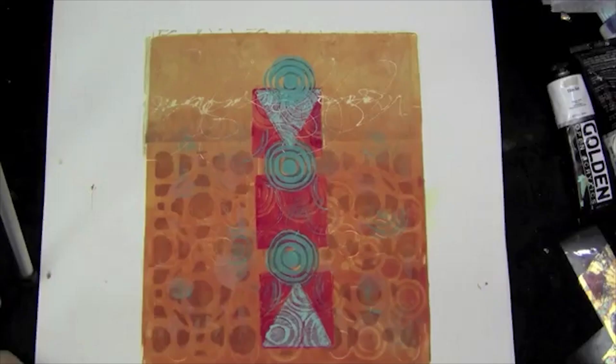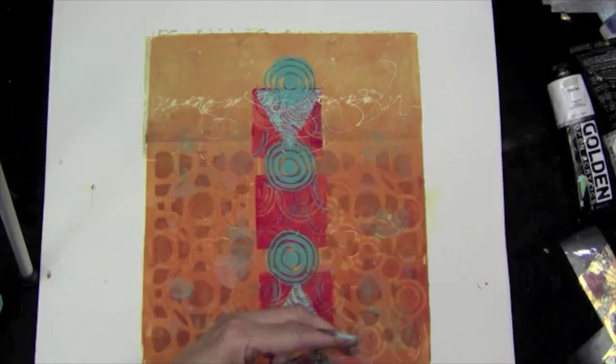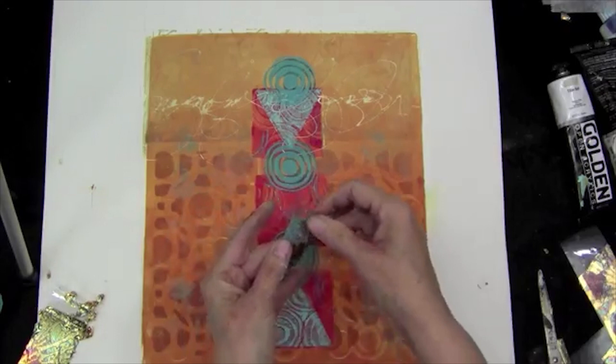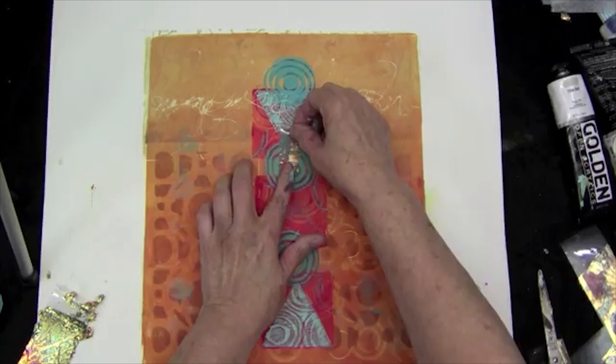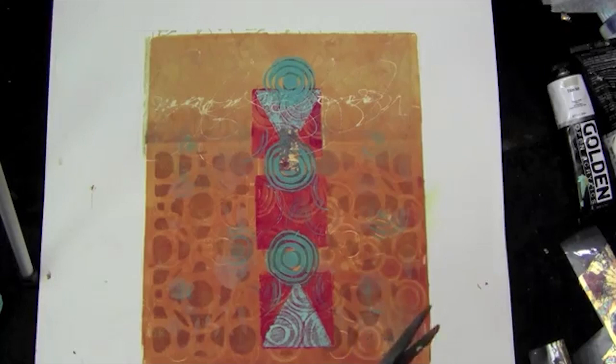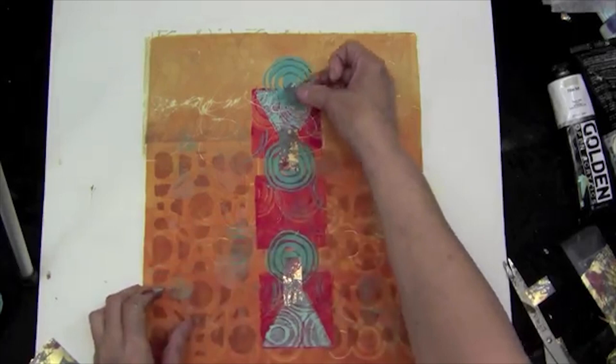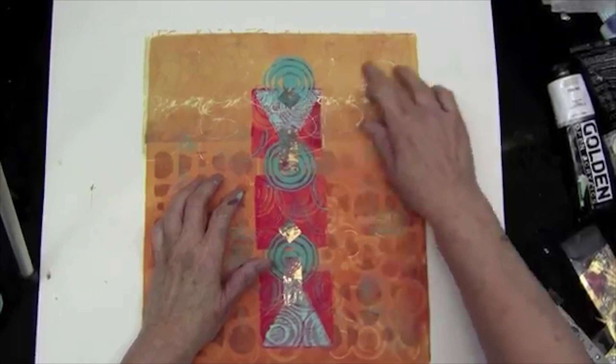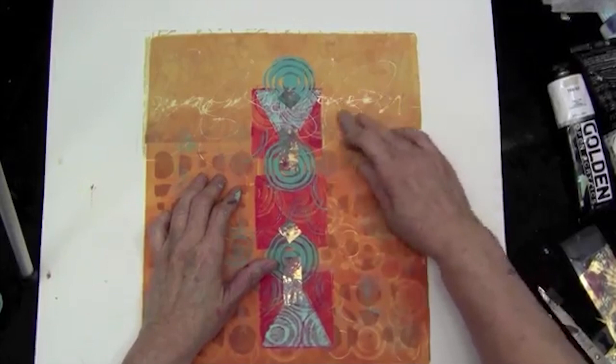I've got my collage pieces here and I'm just going to cut them into some little rectangles, going along with the geometry of the piece. I'm going to put this one here. We forgot, I forgot to take the masking fluid off. Oh, so that gave me a little shadow underneath the writing.